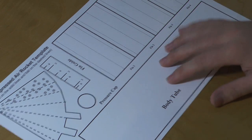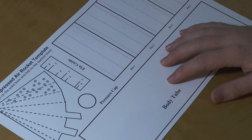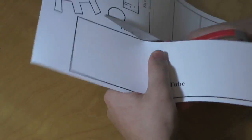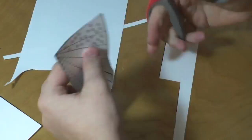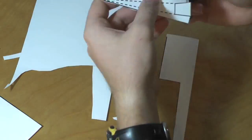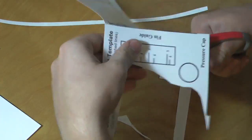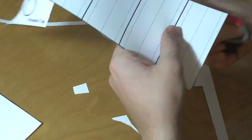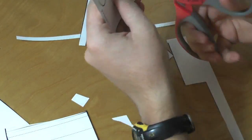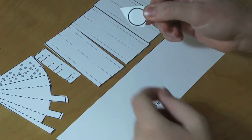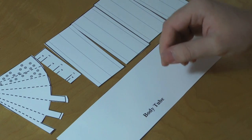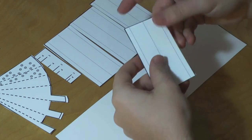Okay, so the first thing you want to do is take your template and cut it out, so that's what I'm going to do right now. Okay, the pressure cap you can throw to the side, and you only need three fins so you can throw the fourth one to the side too.